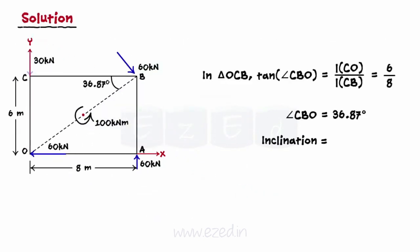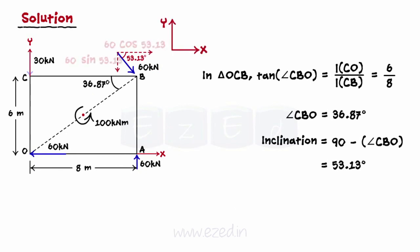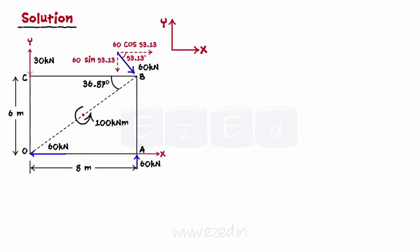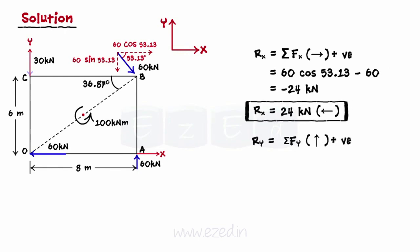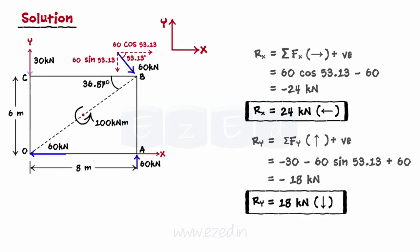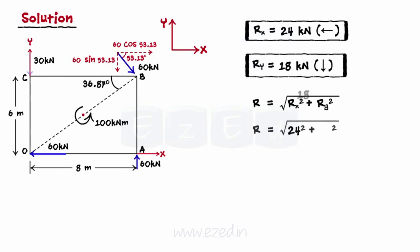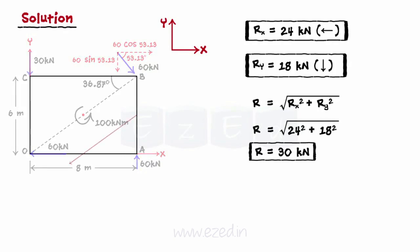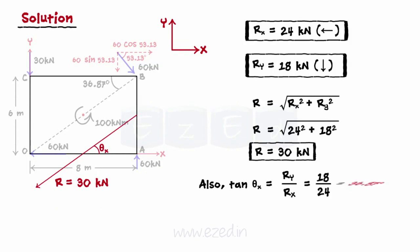We will first find the inclination of the inclined 60 kN force so as to resolve it. We can now resolve it along the x-axis and y-axis as shown. After that, we find the summation of the forces along the horizontal and vertical axis respectively, that is, the horizontal and the vertical component of the resultant. Then we can find the magnitude of the resultant using this formula, and then easily find the inclination theta of the resultant with the horizontal axis.